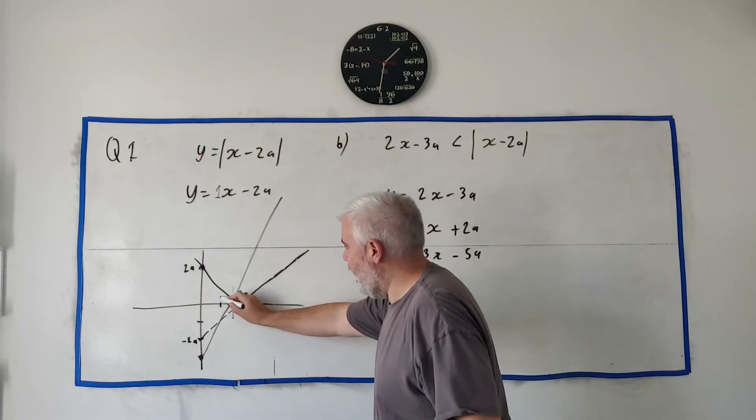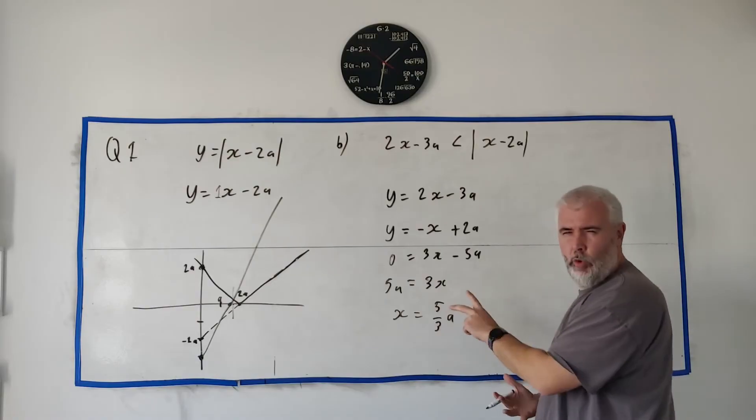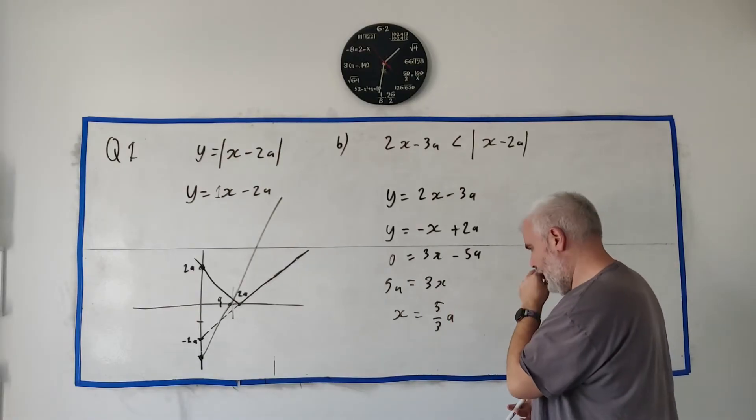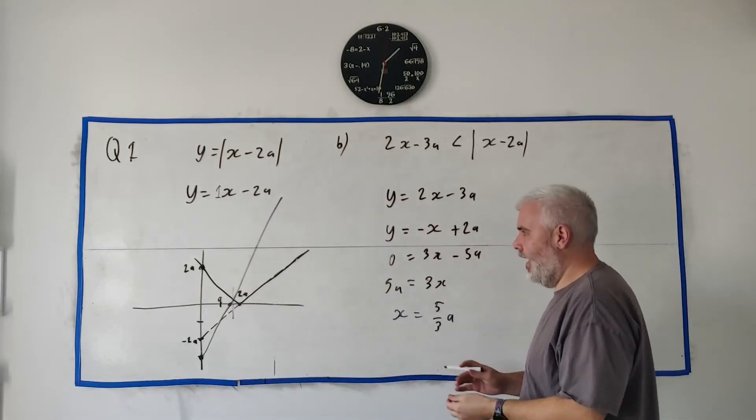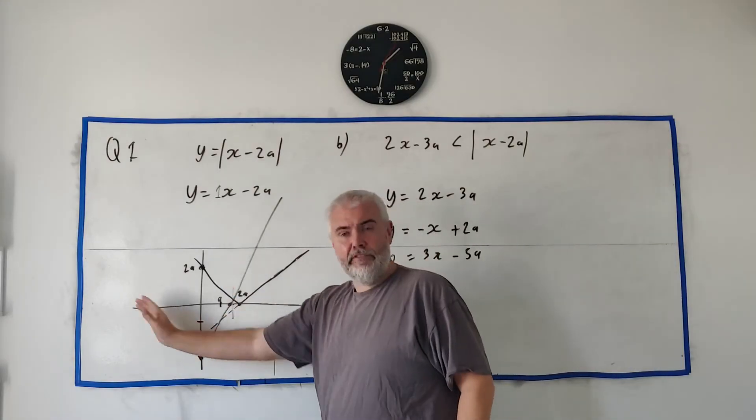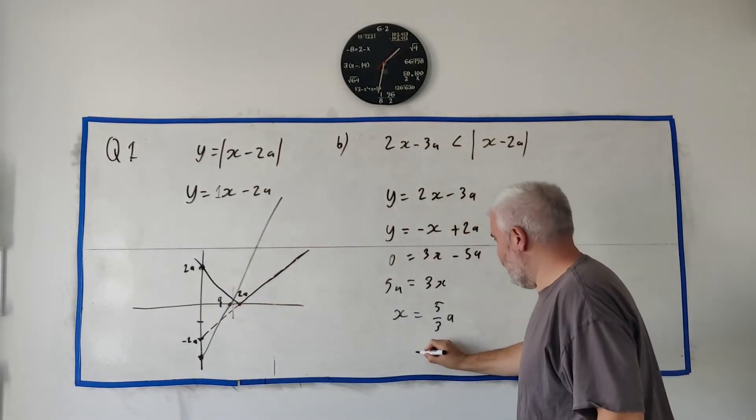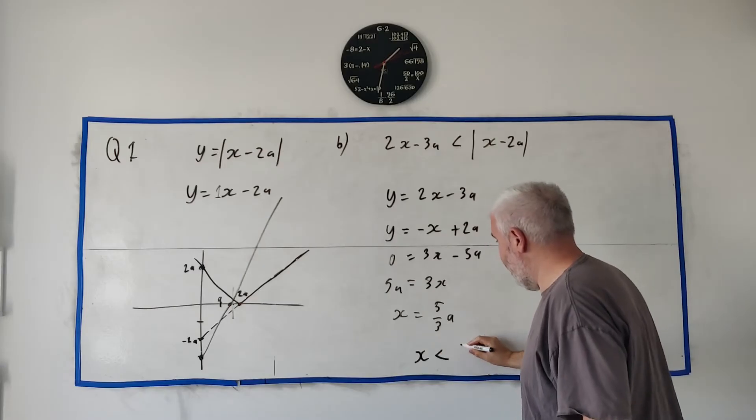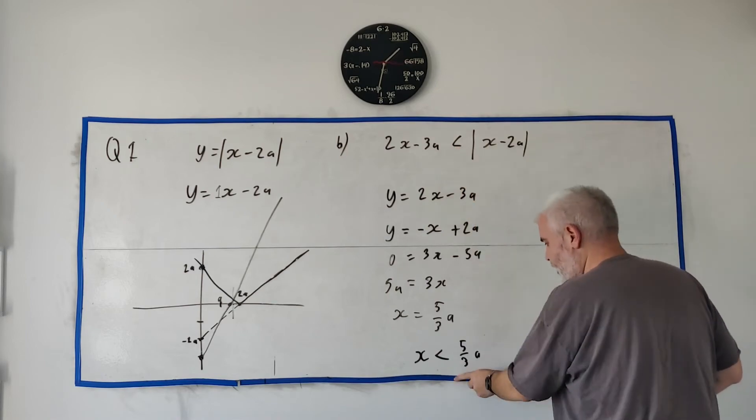And that's this point here: 5 over 3. Remember that's a, 1a, 2a. 5 over 3a is like 1.66, so it's somewhere just here. And that's the answer. The answer is, well, that's nearly the answer. The answer is everything left of this point is when this is less than that. So the real answer is x is less than 5 over 3a. Yeah, less than. Not less than or equal to, just less than. And that's the full answer for this.